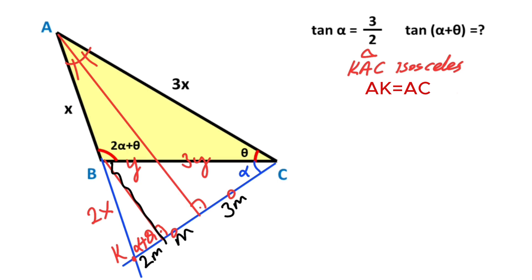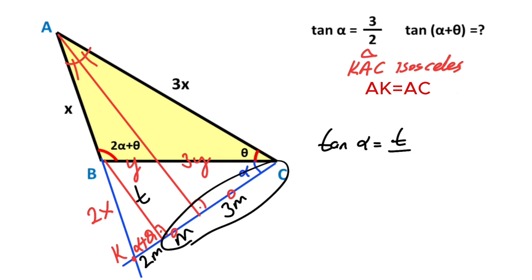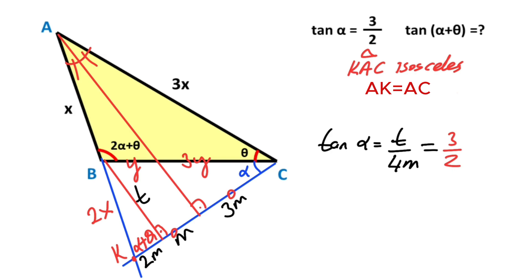Next step — let's call this point T. If you focus on this triangle, tangent of alpha equals T over 4m. And we know that at the beginning of the question, tangent alpha is given as 3 over 2. Therefore T equals 6m. So let's write here: T equals 6m.